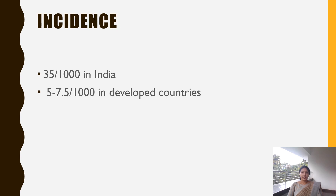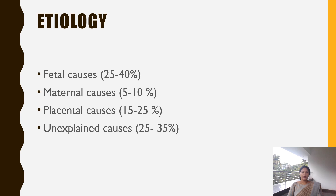The incidence of intrauterine fetal death is 35 in 1000 live births in India, and in developed countries it is 5 to 7.5 out of 1000 live births. The causes include fetal causes, maternal causes, placental causes, and unexplained causes. Fetal causes account for 25 to 40 percent, maternal causes 5 to 10 percent, placental causes 15 to 25 percent, and unexplained causes 25 to 30 percent of total intrauterine deaths.